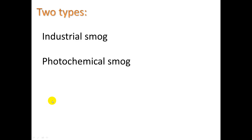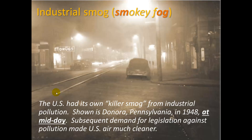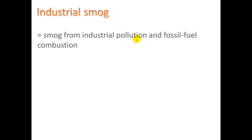There are two types of smog: industrial smog and photochemical smog. The word 'smog' means smoky fog, a term created back in the 1940s. This picture from Donora, Pennsylvania in 1948 at midday shows conditions very similar to London's. The US had its own killer smog from industrial pollution, and subsequent demand for legislation against pollution made the US air much cleaner. Industrial smog comes from industrial pollution and fossil fuel combustion — not just cars.